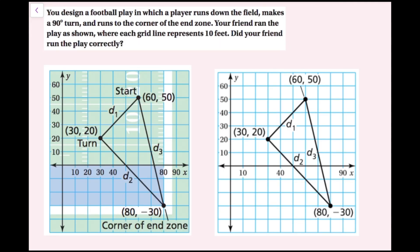For this example, you design a football play in which a player runs down the field, makes a 90-degree turn, and runs to the corner of the end zone. Your friend ran the play as shown, where each grid line represents 10 feet. Did your friend run the play correctly? We need to figure out whether that angle is actually a right angle using the converse of the Pythagorean theorem. I'll draw triangles to find all the side lengths, using different colors.